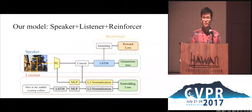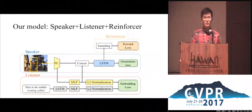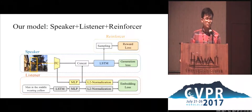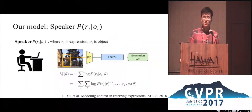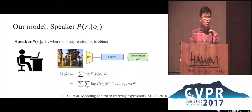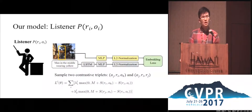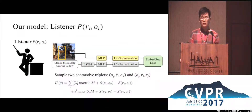Our full model is composed of three modules: speaker, listener, and reinforcer. During training, the speaker and listener are trained jointly so that the two parts are aware of each other's behavior. For the speaker module, we use our previous work to extract the visual comparison features, then use a CNN to LSTM framework as the model. In the listener, we use LSTM to encode the input expression, then embed both visual and language features into a common space. During training, we sample two contrastive triplets to learn the embedding loss. We share the parameters of the listener's visual representation and word embedding with the speaker, so that the two modules are aware of each other.